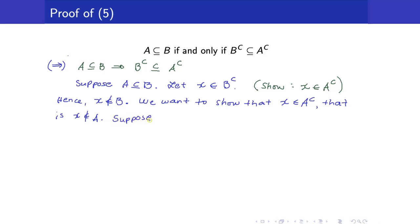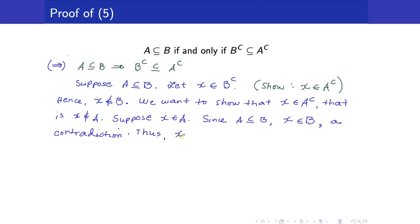Suppose that X is an element of A. If X is an element of A, but we have our premise that A is a subset of B, it only means that X must be an element of B as well. That contradicts the fact that X is not an element of B. Hence, X must not be in A, or equivalently, X is an element of A complement. So we obtained what we want — we started with an element of B complement and ended up with that element being in A complement.